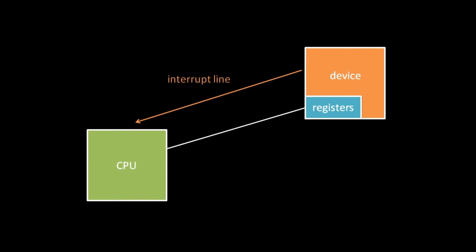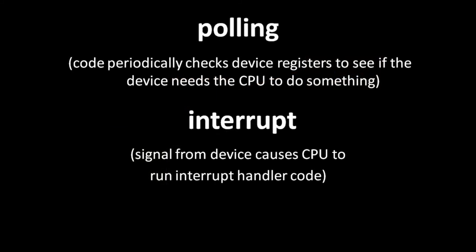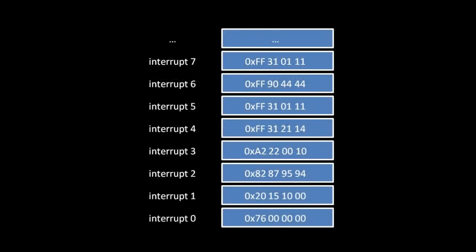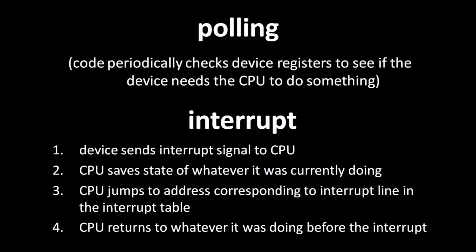An interrupt line is a circuit path running from the device to the CPU, over which the device can signal to the CPU that it wants attention. When receiving this signal, the CPU temporarily sets aside what it's doing to run the interrupt handler — a piece of operating system code associated with that interrupt line. The operating system stores a list of addresses for these handlers in the interrupt table, and the CPU keeps the location of this table in a status register. When an interrupt signal is received, the CPU copies the current program counter to memory so it can later pick up where it left off, then looks in the interrupt table for the handler address associated with the interrupt line. The CPU then jumps execution to this address, and the handler does its business to service the device. When finished, the handler restores the CPU to its state before the interrupt.